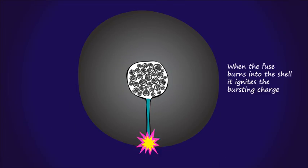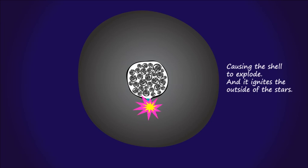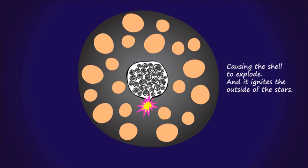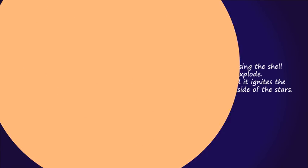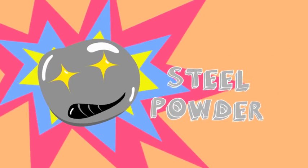When the fuse burns into the shell, it ignites the bursting charge, causing the shell to explode and it ignites the outside of the stars, which is a sparkler, consisting of fuel and steel powder.